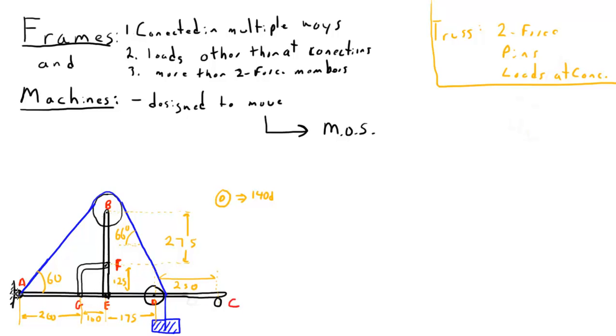So the first thing you'll note is you have this member that goes from A to C. It certainly has loads at the two supports, but it also has a possibility of having loads being applied to it at D, E, and G. The same for this member that goes from E to B. You can have a load applied to it here at F. So the members AC and BE are not two force members. There can be forces applied to the two endpoints, but there can be forces applied to places not at the endpoints as well. Therefore, they are not two force members.